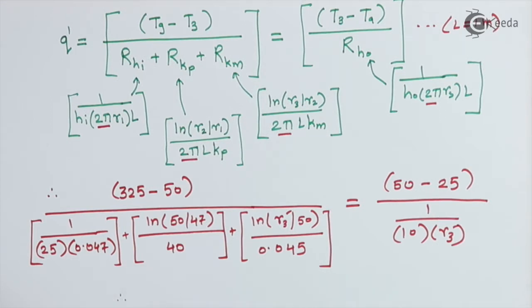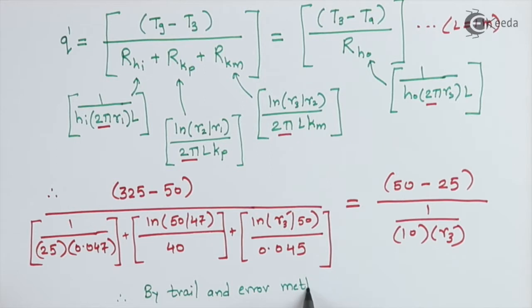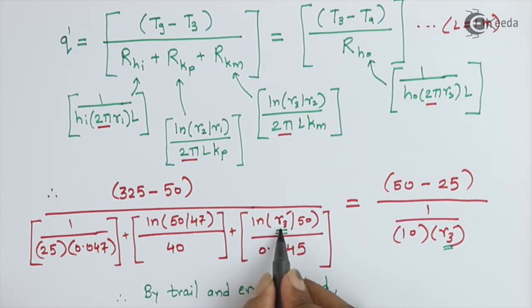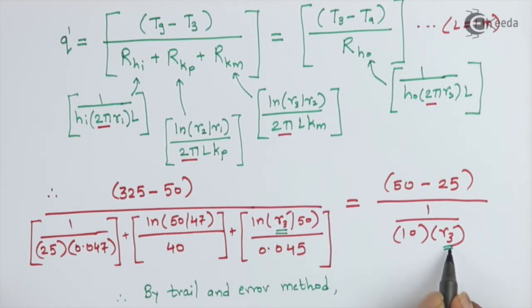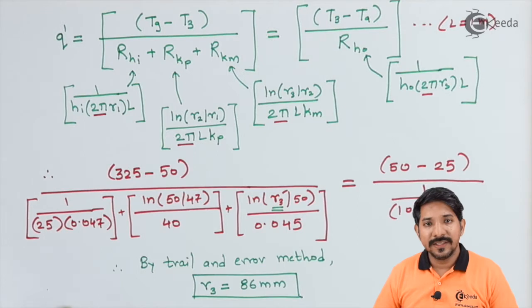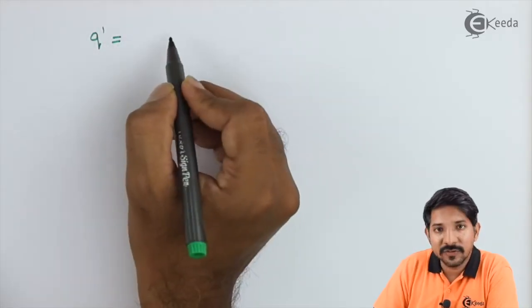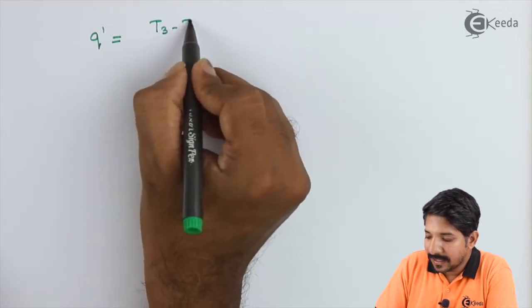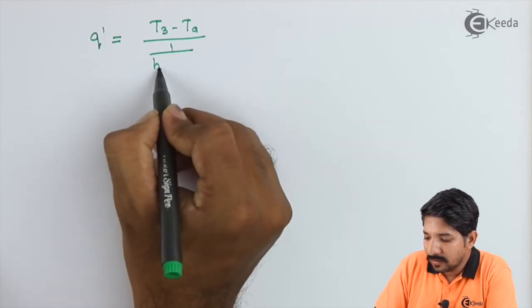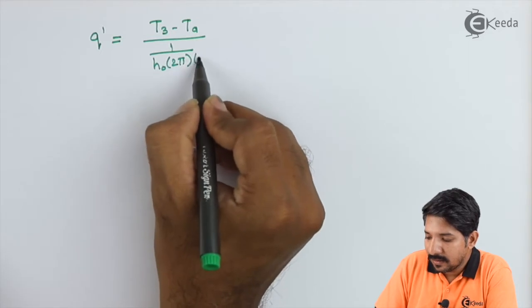We solve for r3 by trial and error, because r3 appears in a logarithmic term on one side and in an algebraic form on the other side, making it impossible to solve linearly. Finally, we get the answer: r3 ≈ 86 mm. This completes the first part of the solution. For the second part, Q' = (T3 − Ta) / [1 / (ho × 2π r3 × L)].